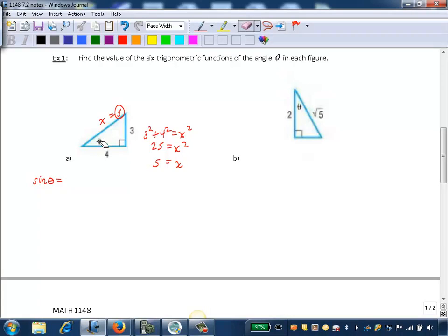As it's written here with theta here, 3 is the opposite side because the two sides of the angle theta open up to the opposite side 3. This is the hypotenuse because it's opposite the right angle, and the other side is our adjacent side.